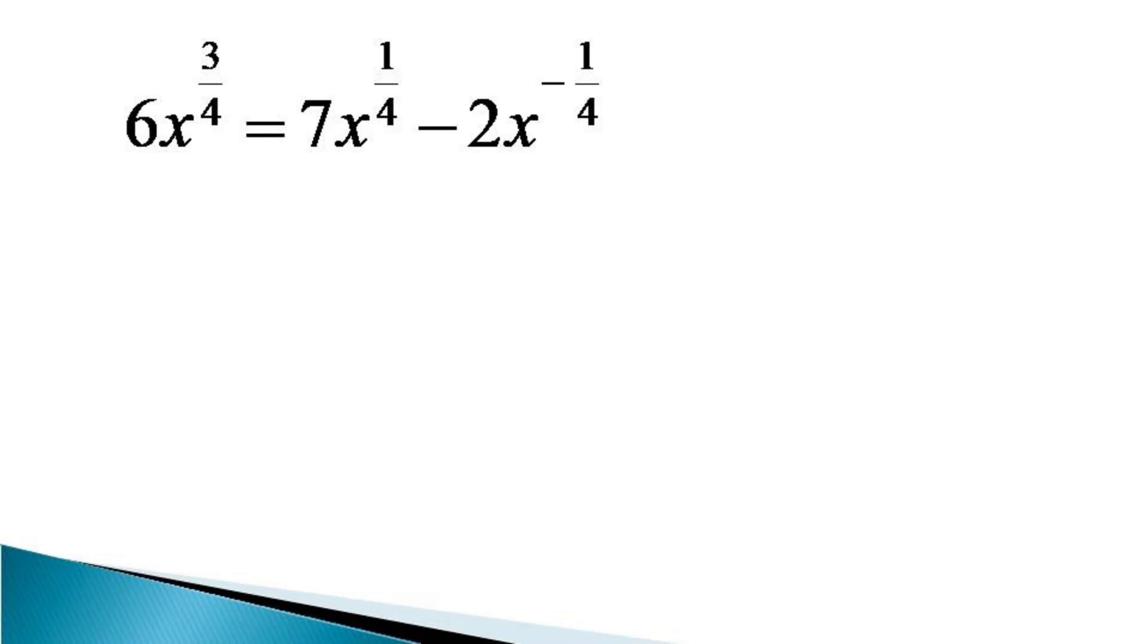This results in an equivalent equation as 6x raised to the power 3 by 4 into x raised to the power 1 by 4 is equal to 7x raised to the power 1 by 4 into x raised to the power 1 by 4 minus 2x raised to the power minus 1 by 4 into x raised to the power 1 by 4.